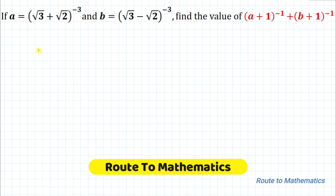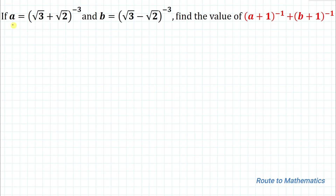Hello everyone, welcome to Root 2 Mathematics. In this video we're going to solve an interesting exponential question. The given question is: if a equals (√3 + √2)^(−3) and b equals (√3 − √2)^(−3), then find the value of (a+1)^(−1) + (b+1)^(−1). So we have the values of a and b, and we're asked to find those expressions.